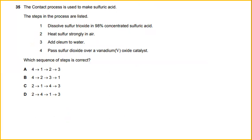The contact process is used to make sulfuric acid. The steps in the process are: first, heat sulfur strongly in the air; then pass sulfur dioxide over a vanadium oxide catalyst; then dissolve sulfur trioxide in 98% concentrated sulfuric acid; and finally add oleum to water.